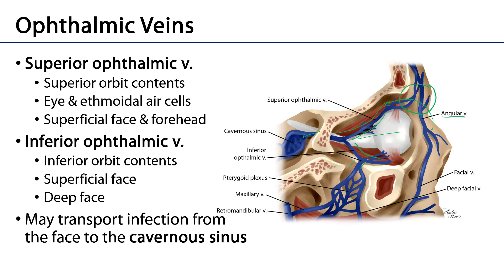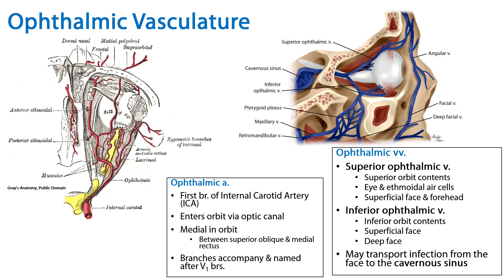Both the superior and inferior ophthalmic veins are going to drain into the cavernous sinuses. We've discussed the ophthalmic artery and some of its branches, as well as the ophthalmic veins and their tributaries.